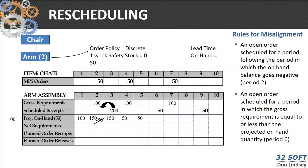I have a scheduled receipt of 50, with 50 available in period 5 and 0 gross requirement in period 6. That means I don't need that, so it's going to tell me to de-expedite that. And I don't have any requirement for this arm assembly out past period 9, so it's going to tell me to cancel that.